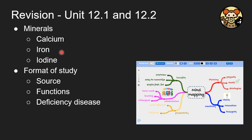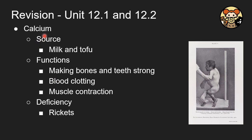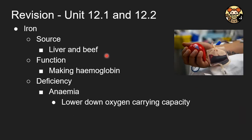Now we move to minerals. We cover calcium, iron, and iodine. For each mineral, remember the source, function, and deficiency disease. For calcium, the source is milk and tofu. The function is to make bones and teeth strong, aid blood clotting, and support muscle contraction. Deficiency causes rickets. For iron, the source is liver and beef. The function is to make hemoglobin. Deficiency causes anemia, which lowers the oxygen-carrying capacity of the blood.